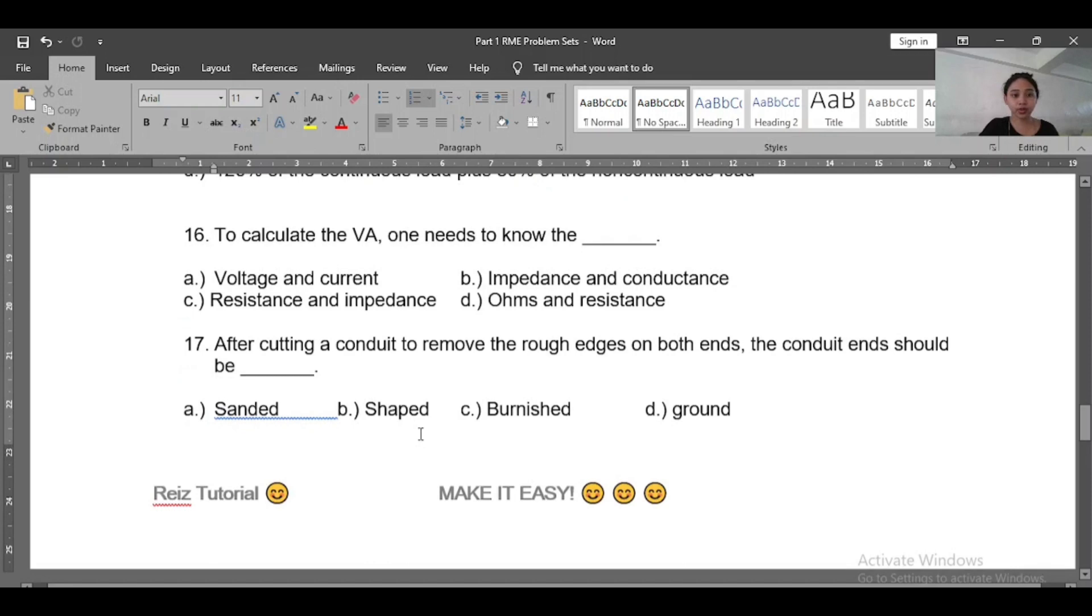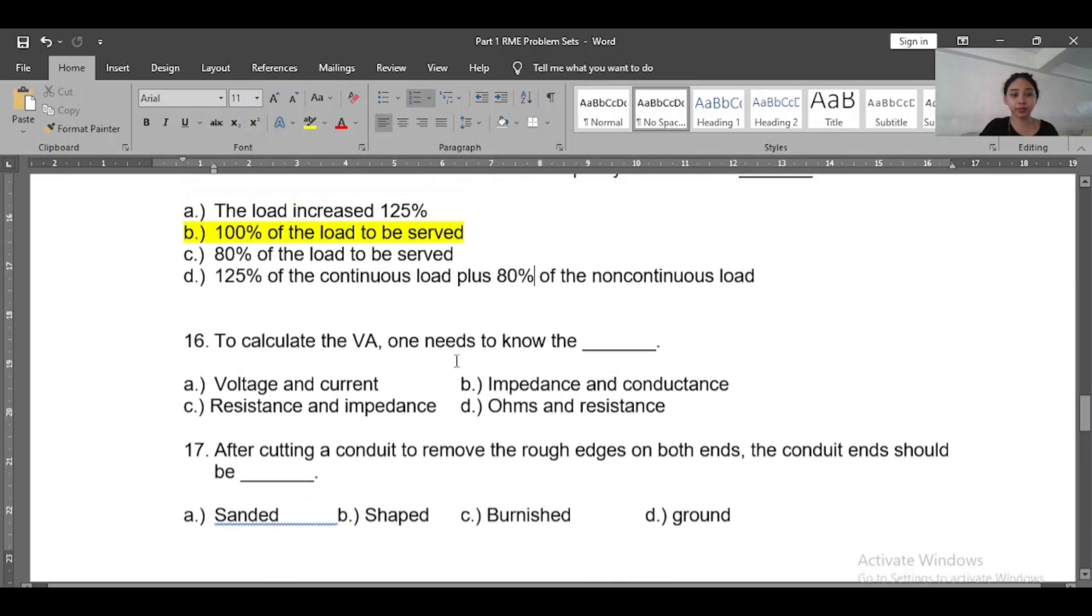Number sixteen: To calculate the voltage or the VA, one needs to know the what? The voltage and current. So we have choices: voltage and current, resistance and impedance, impedance and conductance, ohms and resistance. So from the abbreviation itself it says voltage and current - V and A.